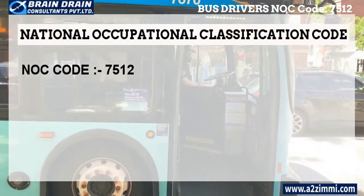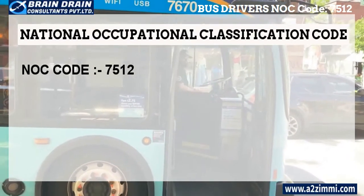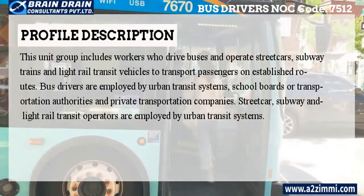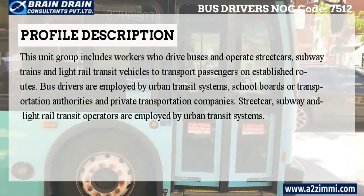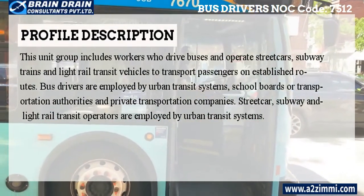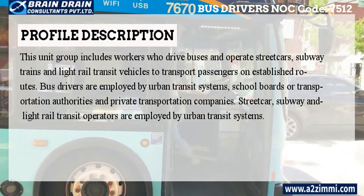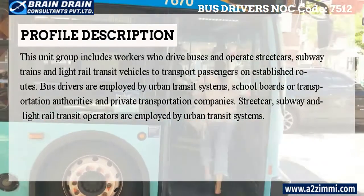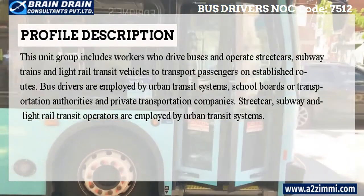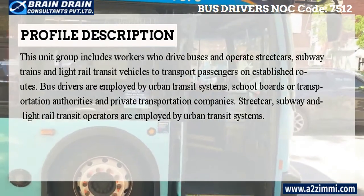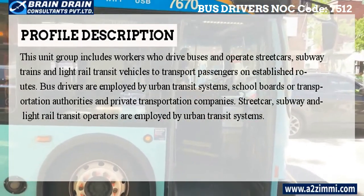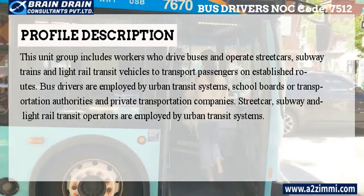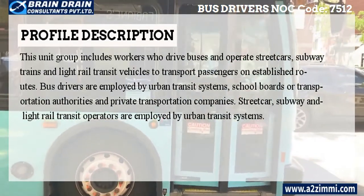The National Occupation Classification Code or NOC Code for the profile of bus drivers, subway operators, and other transit operators is 7512. As per Statistics Canada, this unit group includes workers who drive buses and operate streetcars, subway trains, and light rail transit vehicles to transport passengers on established routes. Bus drivers are employed by urban transit systems, school boards, or transportation authorities and private transportation companies. Streetcar, subway, and light rail transit operators are employed by urban transit systems.